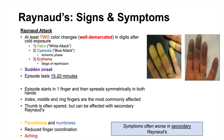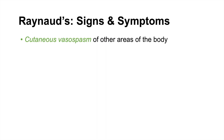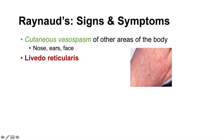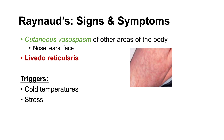Other signs and symptoms include cutaneous vasospasm in other areas of the body. Blanching, pallor, and cyanosis can occur in the nose, ears, and face. We may also see livedo reticularis — a webbing pattern on the skin — in the hands or other parts of the body. Triggers of a Raynaud attack include cold temperatures, stress due to catecholamines causing vasoconstriction, and vibration or other trauma on the hands.